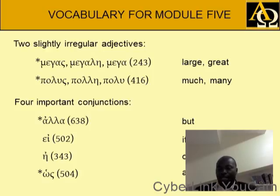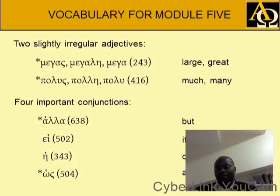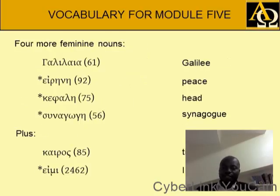Other vocabulary: alla means but; ei — if it has a circumflex it's you are, if it's ei with no accent it's if; e means or; hos means as, like. Galilaia, Galilean. Eirene means peace. Kephale means head. Sunagoge means synagogue. Kairos means time, season. Eimi means I am.